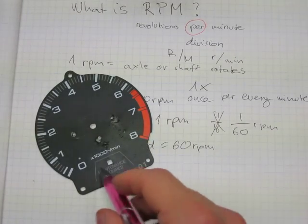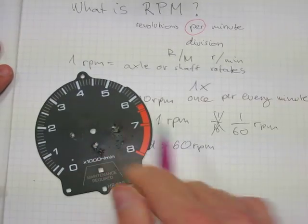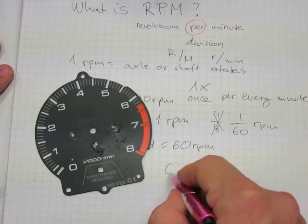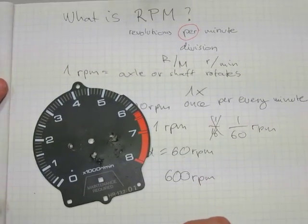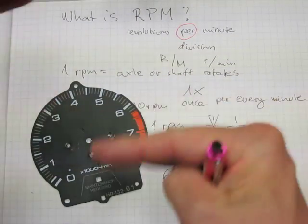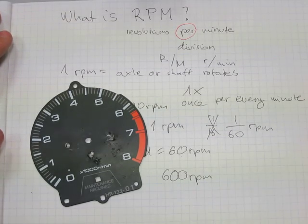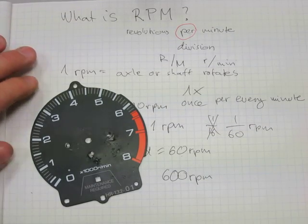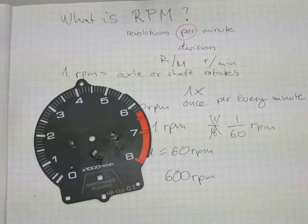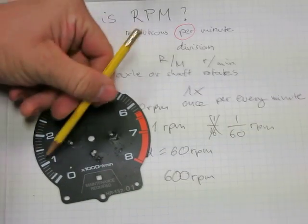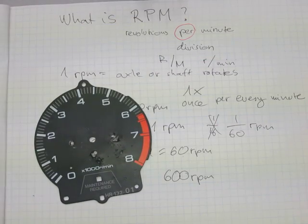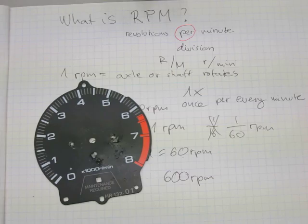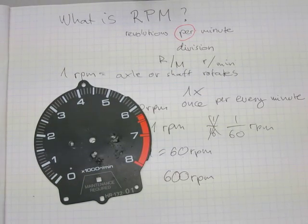Typically an engine idles at about 600 RPM, meaning the pistons go up and down 600 times every minute. Motorcycle engines idle around 1,200 to 1,500 RPM. So that's what RPM means and that's the context of revolutions per minute.